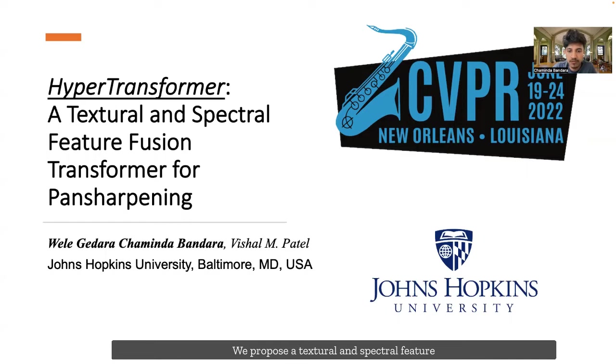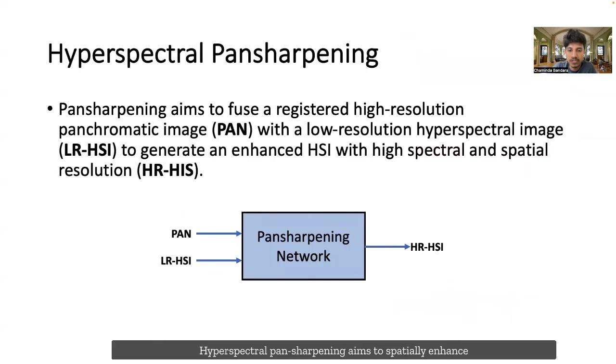We propose a textural and spectral feature fusion transformer for pan-sharpening, or hyper-transformer. Hyperspectral pan-sharpening aims to spatially enhance low-resolution hyperspectral images by transferring textural details from high-resolution panchromatic images while preserving the spectral characteristics of original low-resolution HSIs.